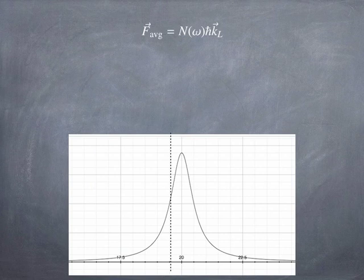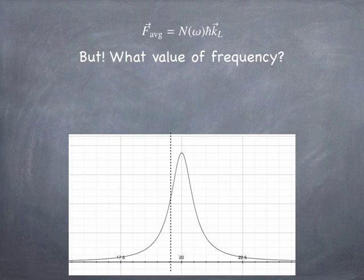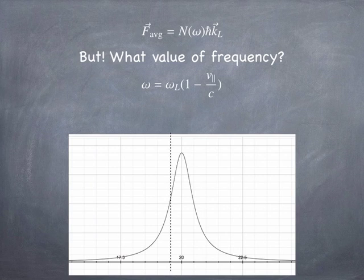And, if you think about that, the issue is, what is the value of the frequency that you need to put into the function n of omega? And the answer is, you need to put in the Doppler-shifted frequency. In other words, the frequency is going to be Doppler-shifted by the motion of the ion. If the ion is moving fast, you put in a lower frequency. But what that does is, it reduces n of omega because of where the laser frequency sits. It's on this highly sloped region of the function n of omega.